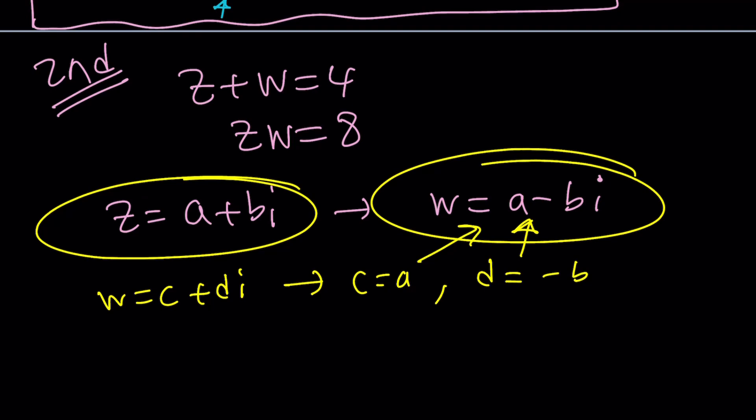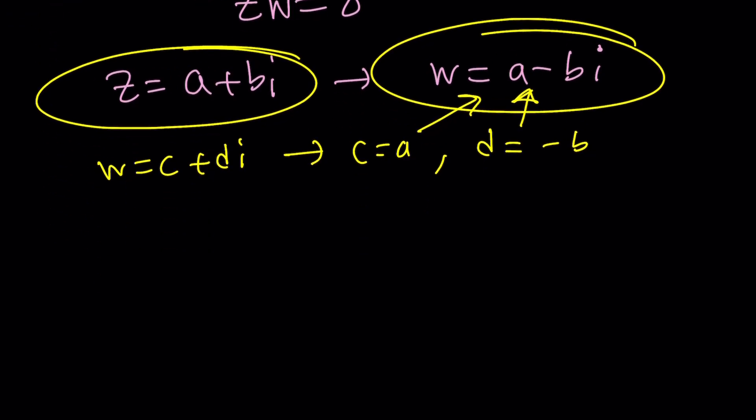This makes our life easier. That's good. Now let's go ahead and add z and w. The sum of z and w bi is going to cancel out. We're going to get 2a. 2a is equal to 4. From here we get a equals 2. Awesome.